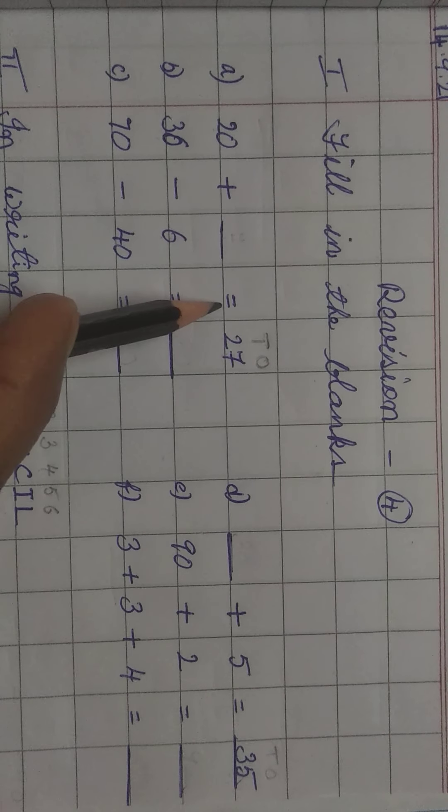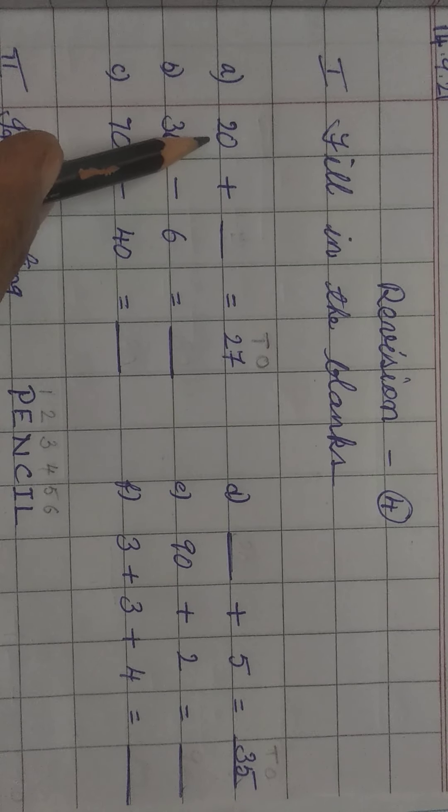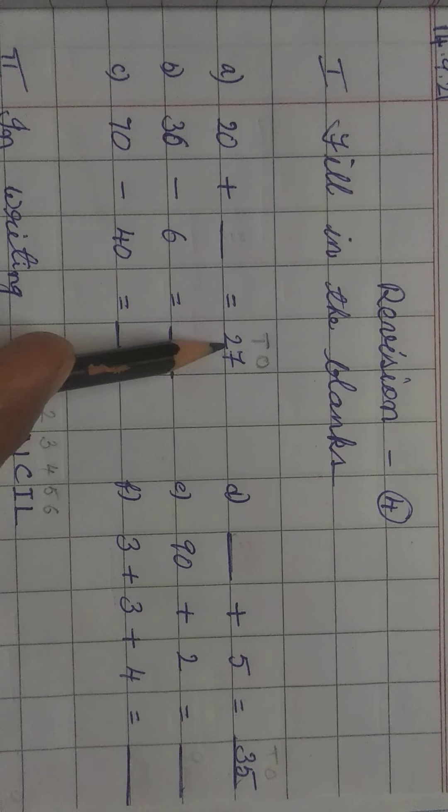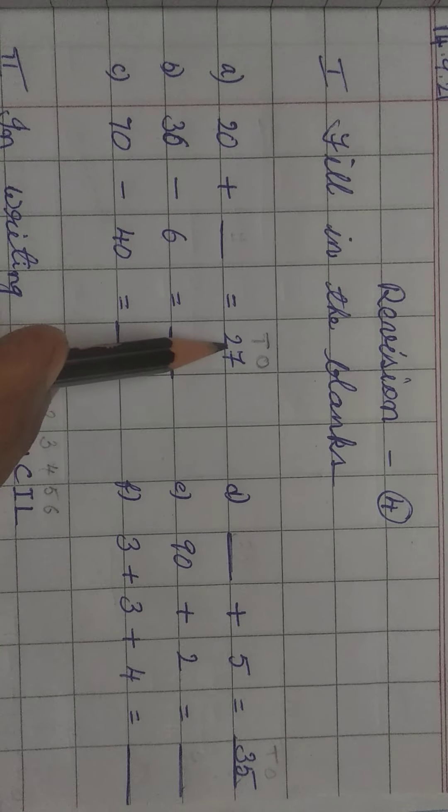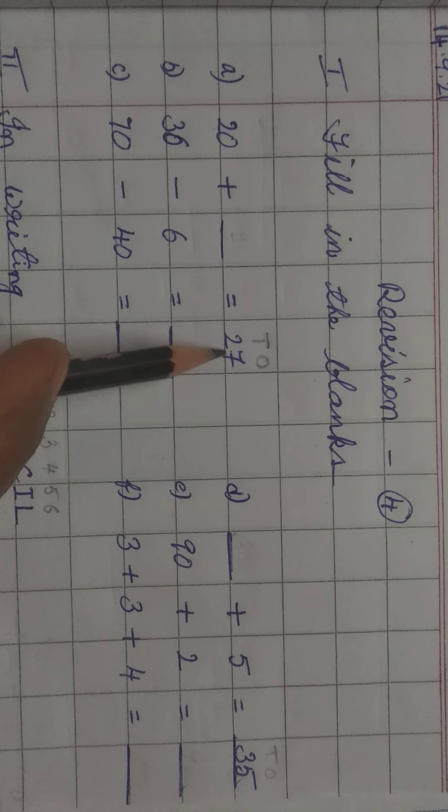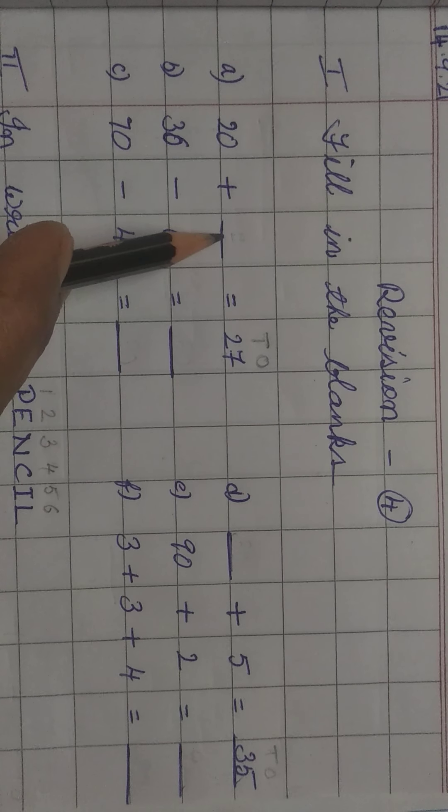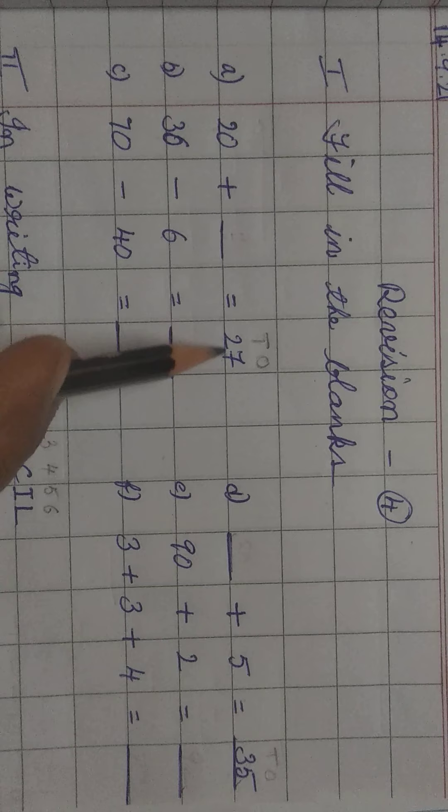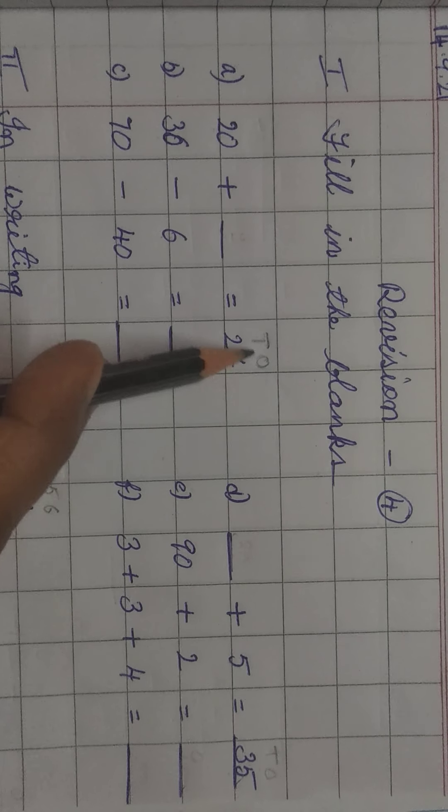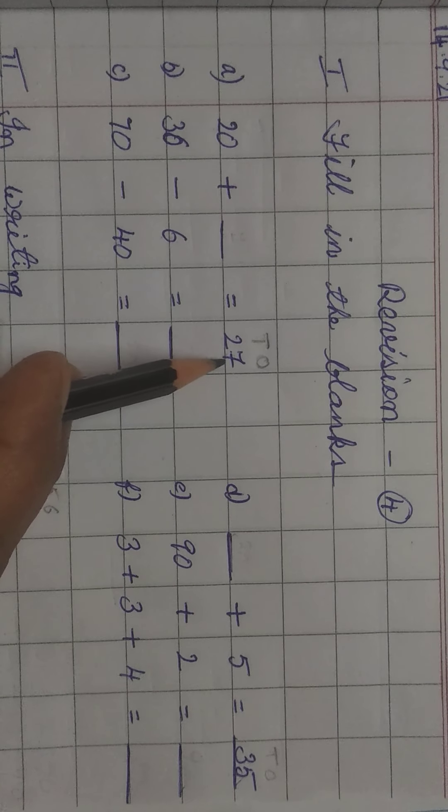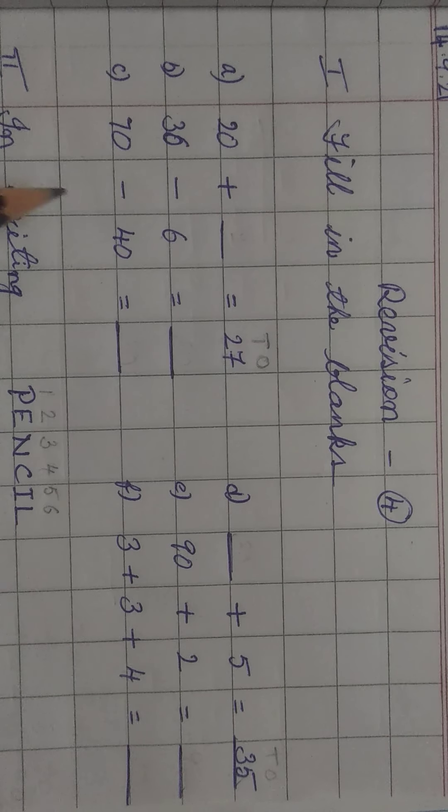20 plus dash is equal to 27. 20 ko kis number add karenge that 27 aata hai, children? So here, the answer is 27. In this blank, to fill the number, first in 27, the numbers on top will show ones and tens places.